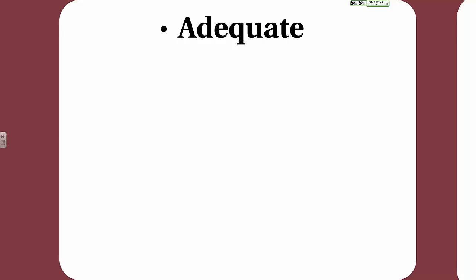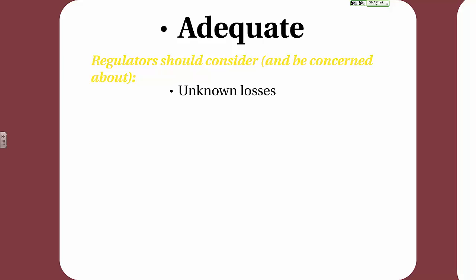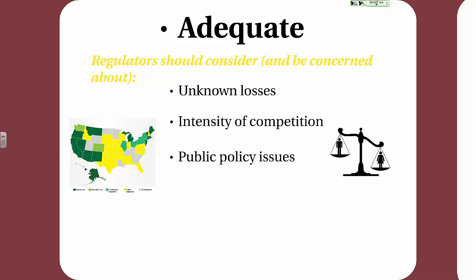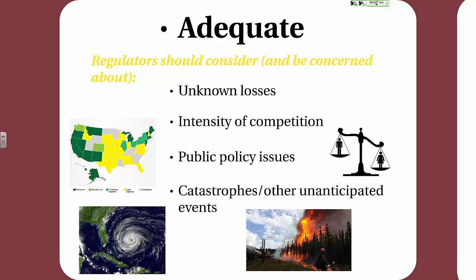Let's look at what regulators should consider in terms of rate adequacy. Regulators should consider unknown losses, the intensity of competition — if competition is extremely intense, insurance companies will tend to price their products lower, and while that might signal a healthy marketplace, it might also indicate rates could be inadequate. Also, public policy issues — for example, the use of recreational and medical marijuana, where liability associated with this exposure can vary based on public policy and other state laws. And last, catastrophes and other unanticipated events — regulators must allow for that catastrophe load, making sure pricing is adequate in the event of a wildfire, hurricane, or other catastrophic loss.